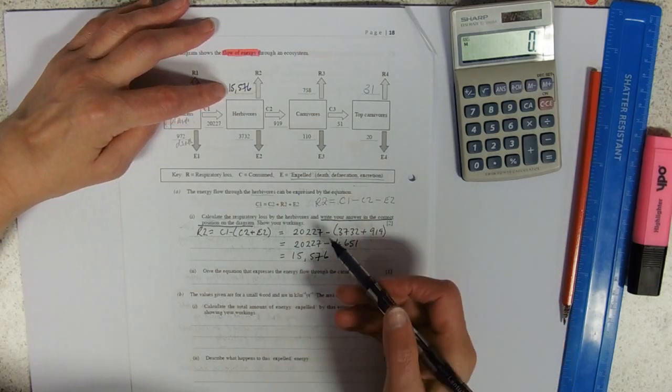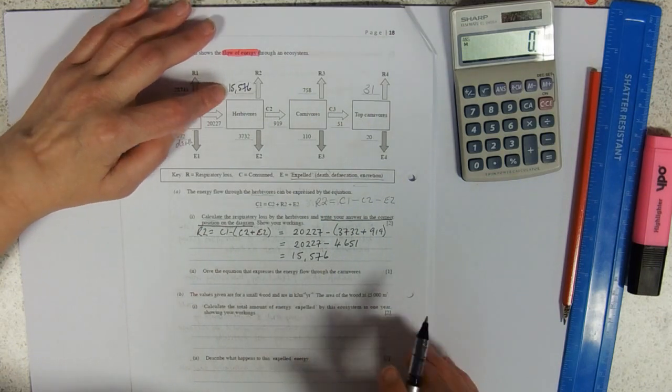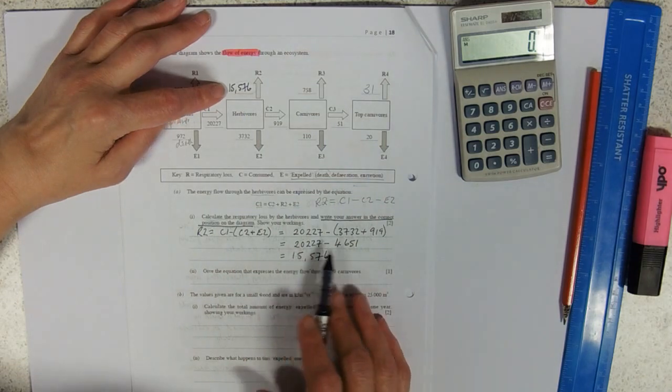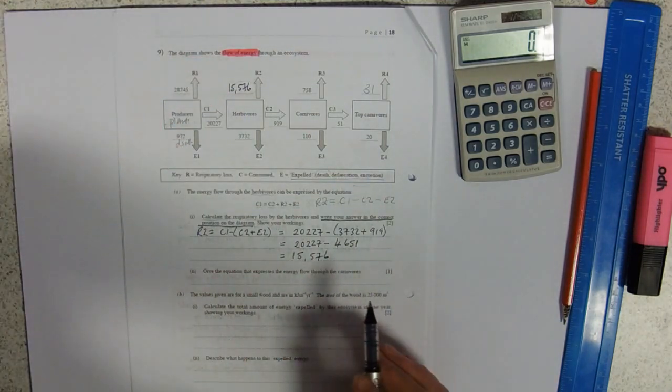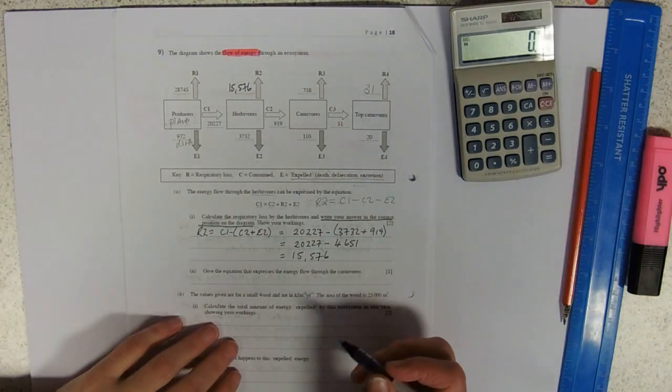Okay, 15,576. So that will let me access the mark. If it's not on the line when they've told me to put it on the line, I'm not going to get there. I'm showing my working because if I punch my numbers in incorrectly—and they are quite big numbers sometimes in ecology—so if I punch them in incorrectly and get the wrong answer, I might still get a mark for the working.